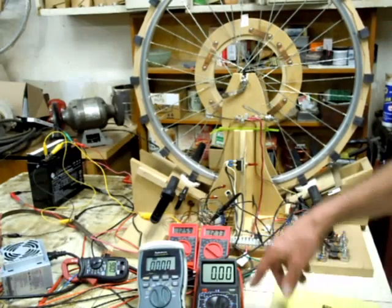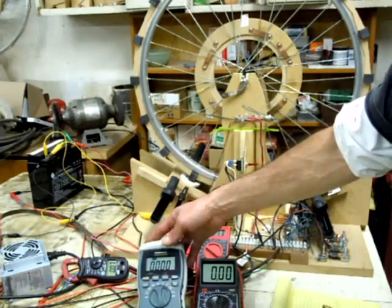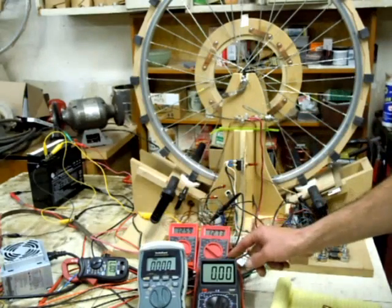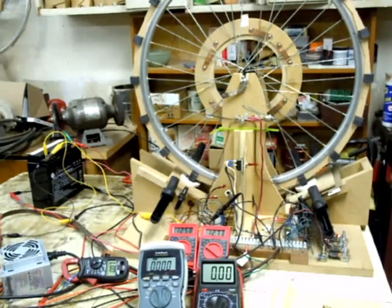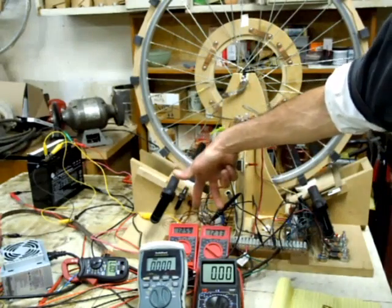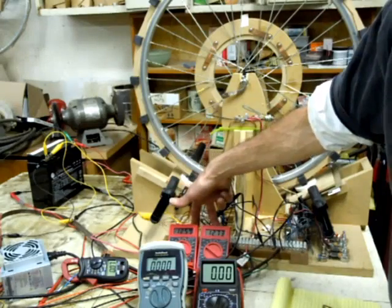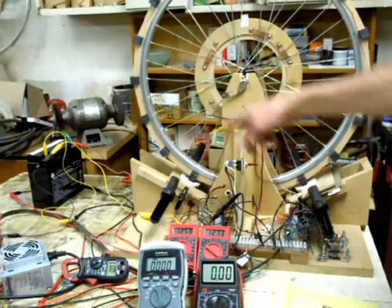This is the draw from the power supply. This one is the input to the charge battery. Both of these are actually showing you the voltage of that battery right now.